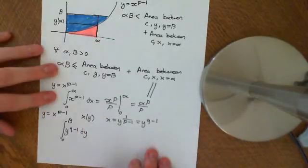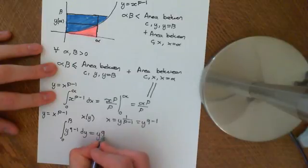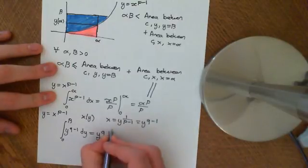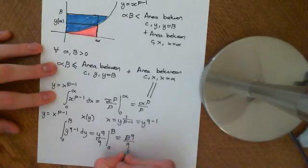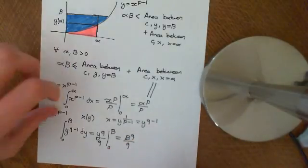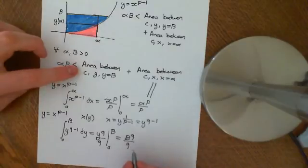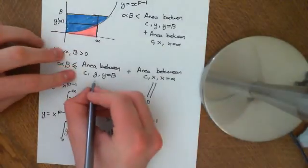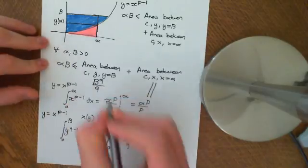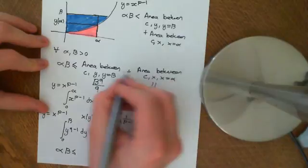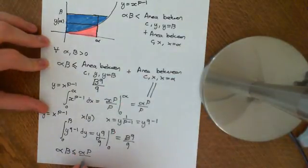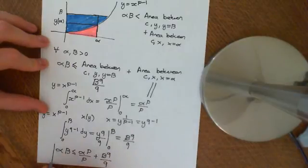By the fundamental theorem of calculus, this equals y to the q over q evaluated from 0 to beta, which gives beta to the q over q. Therefore, combining both areas, we get that alpha times beta is less than or equal to alpha to the p over p plus beta to the q over q, which is Young's inequality.